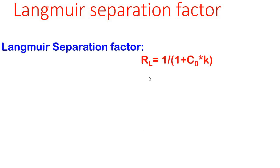So, Langmuir separation factor can be written as RL equals 1 divided by 1 plus C0 times K, where C0 is the initial concentration and K is the Langmuir constant.